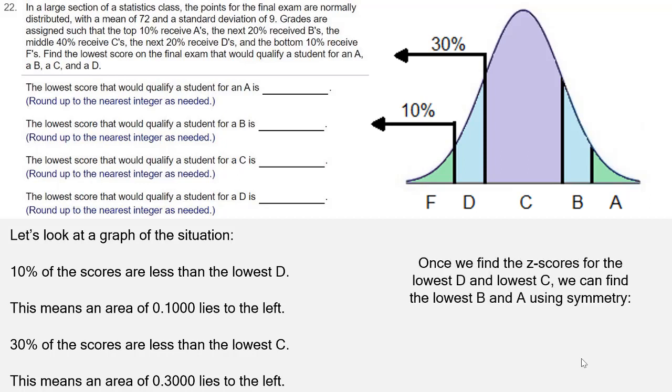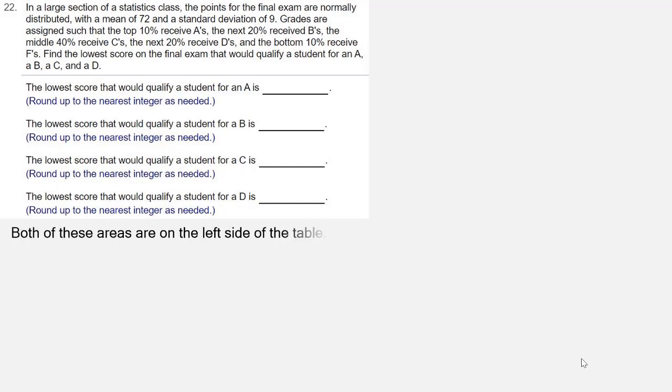Once we find the Z-scores for the lowest D and the lowest C, then we can find the Z-scores for the lowest B and the lowest A using symmetry. Both of the areas that we talked about for the lowest D and the lowest C are on the left side of the table because they are less than 0.5.